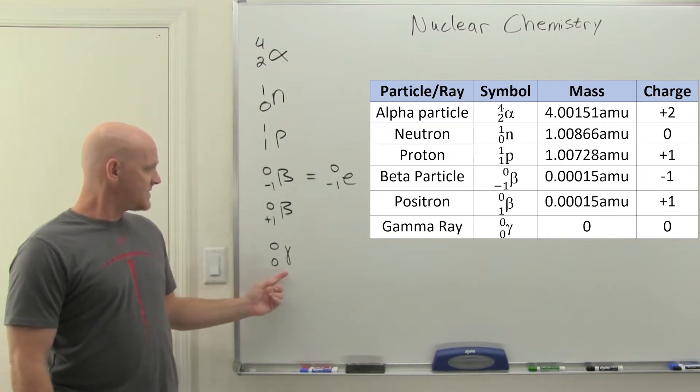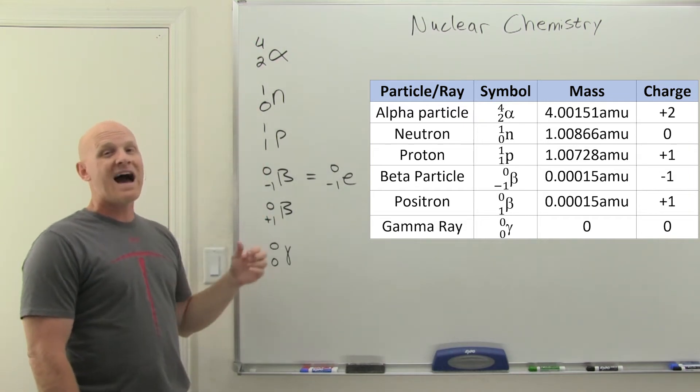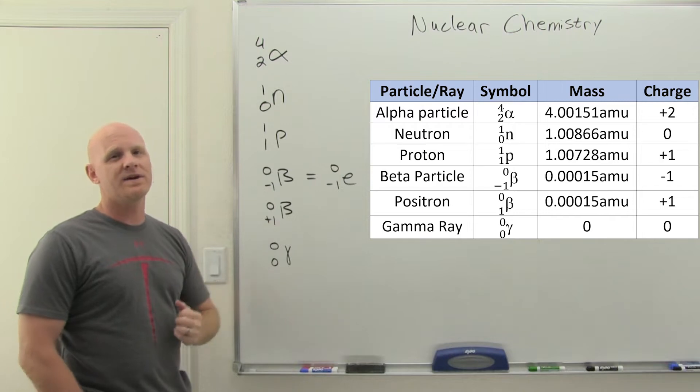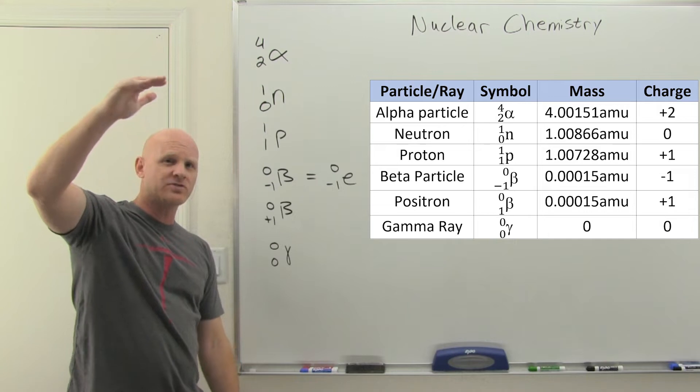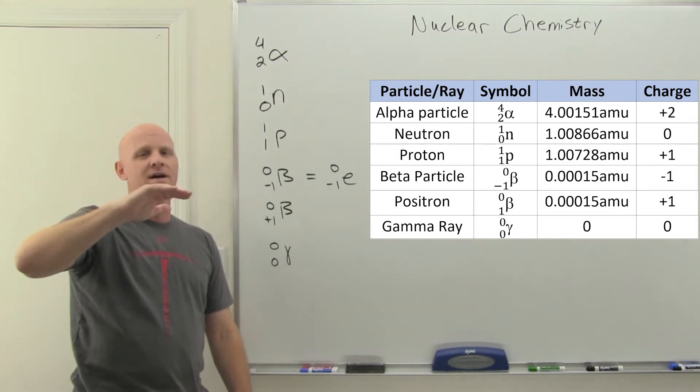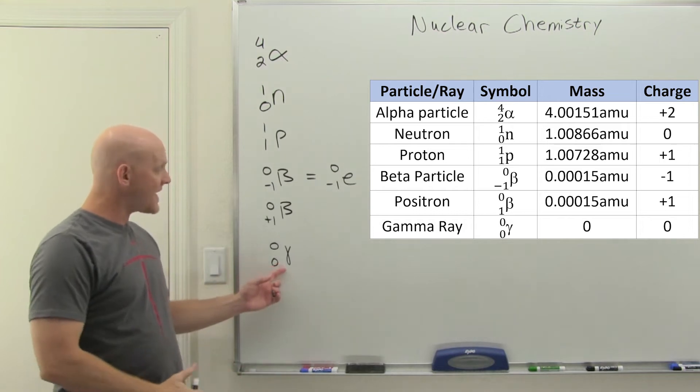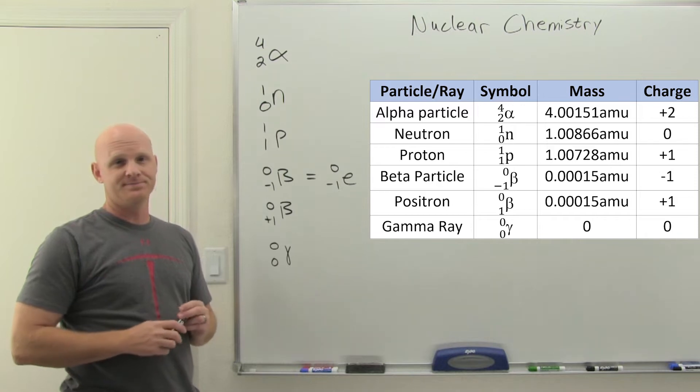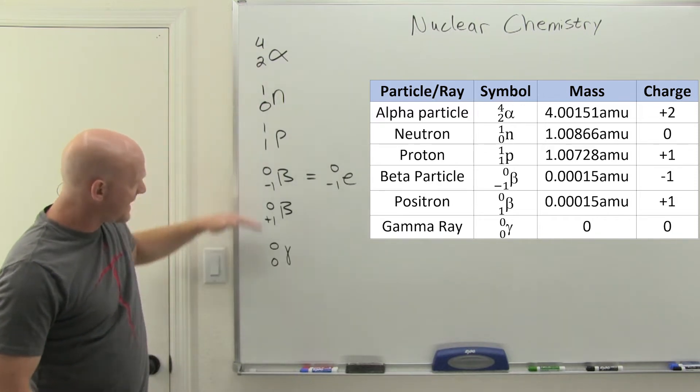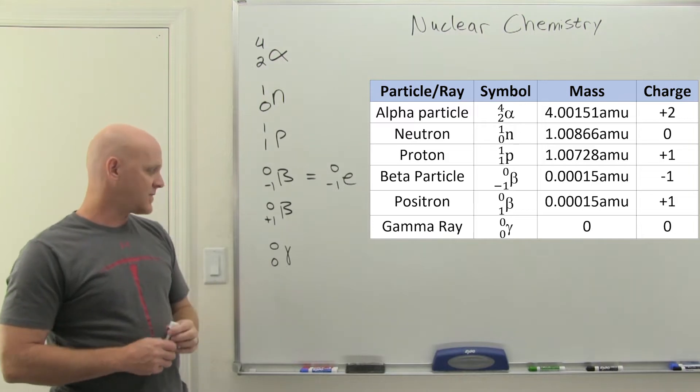Last but not least, we have the gamma ray. This is the only thing up here that's not a particle - these are all particles, but this is a gamma ray. This is the highest energy electromagnetic radiation. You might recall earlier in the course we talked about electromagnetic radiation - gamma rays, then X-rays, then ultraviolet, visible spectrum, infrared, microwaves and radio waves. These are the highest energy and often associated with nuclear radiation. We just got to have some familiarity because we're going to bring these up time and time again throughout our discussion.